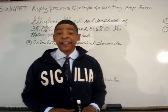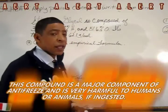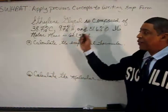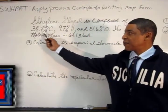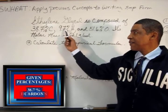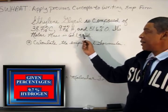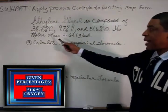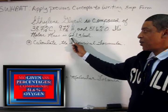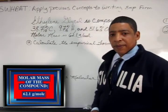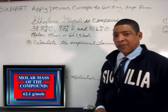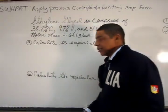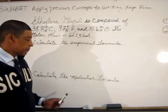Let's attempt to solve a classic practice problem. Ethylene glycol is composed of 38.7% carbon, 9.7% hydrogen, and 51.6% oxygen. Its molar mass is 62.1 grams per mole. In this particular case, we are being asked to determine the empirical formula and the molecular formula.